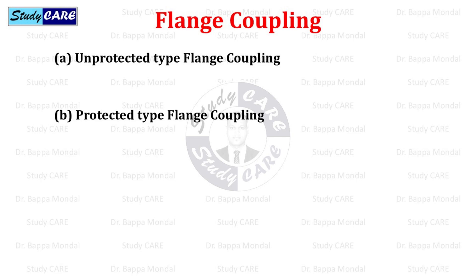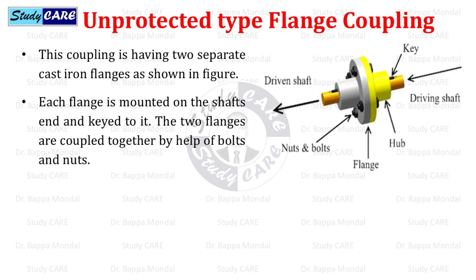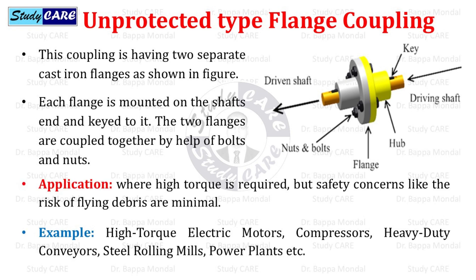Next is flange coupling. There are two types: unprotected and protected. In the unprotected type, the coupling has two separate cast iron flanges, each mounted on the shaft's end and keyed to it, and the two flanges are coupled together by bolts and nuts. These are used where high torque is required but safety concerns like the risk of flying debris are minimal — for example, high torque electric motors, compressors, heavy-duty conveyors, steel rolling mills, and power plants.